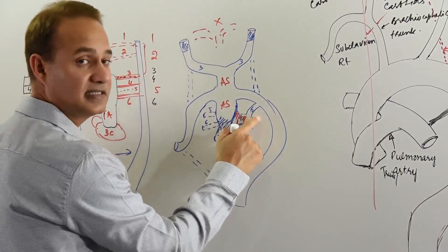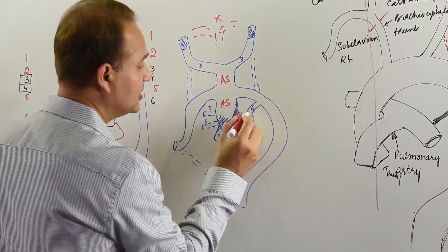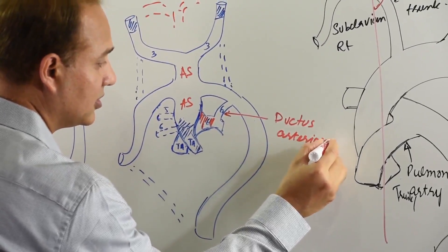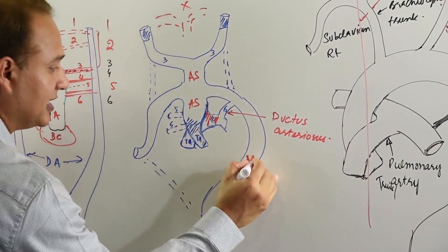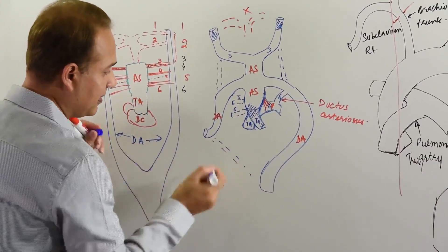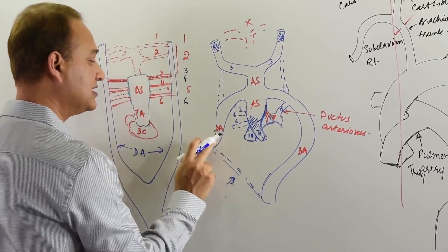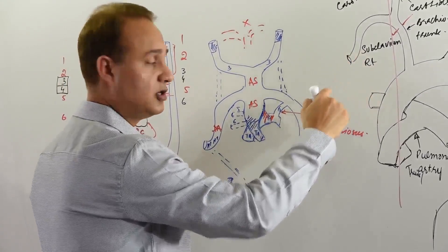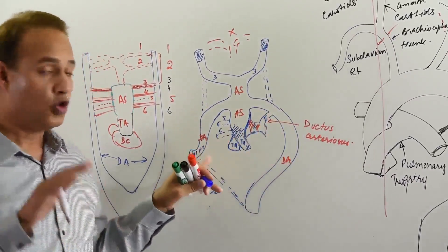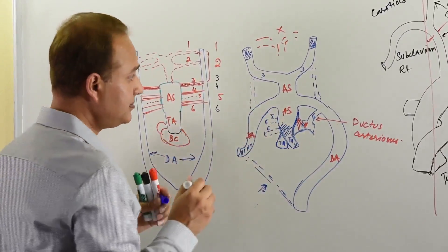The sixth pharyngeal arch artery also connects the left pulmonary artery to the aorta, forming the ductus arteriosus. The dorsal aortae are also present. On the left side, the dorsal aorta makes the arch and descending aorta; on the right side, the dorsal aorta in that vicinity regressed and becomes the subclavian artery. The aorta on the right comes from the truncus arteriosus.